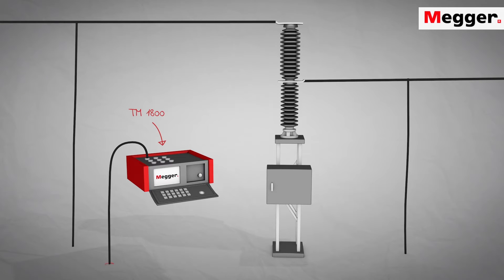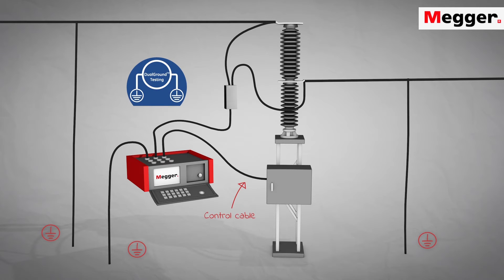Start by connecting the TM1800 to ground. Connect the DCM cables to the circuit breaker. Connect the control cables to the circuit breaker strip and close coil circuits. The test can now be performed safely.